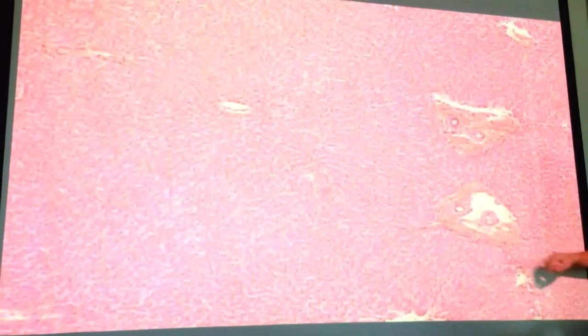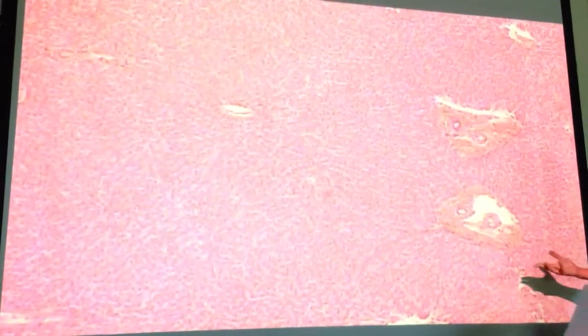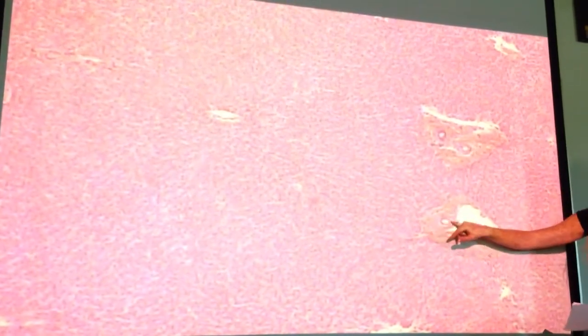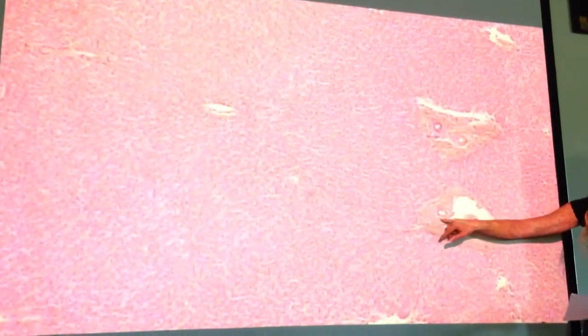So if we come over here, we can identify what these things are. If we look at this one specifically, it's not as clear as I would like it to be, unfortunately, but this is going to be our bile duct. You can tell because there's that dark ring of nuclei that will belong to the cuboidal epithelium, so that's how you know it's a bile duct.